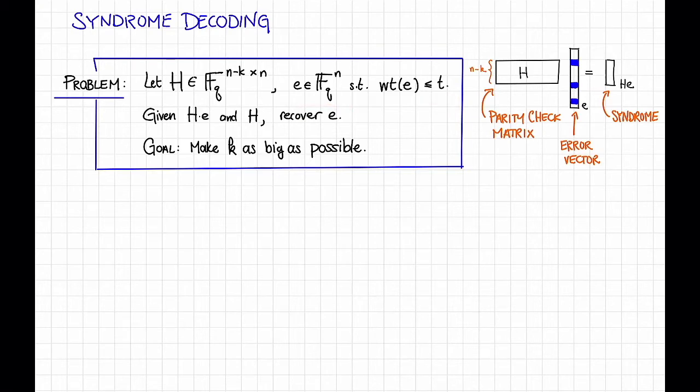And suppose we have an error vector E of weight at most T. Then the syndrome decoding problem is given H times E, this is called the syndrome, and the parity check matrix H, recover the error vector E. And our goal is to be able to do this all while making K, that is the dimension of the code, as big as possible.